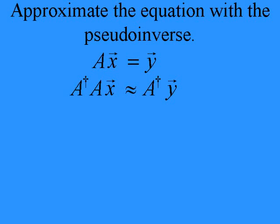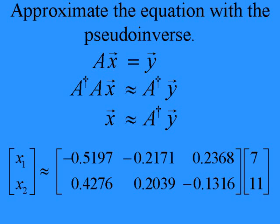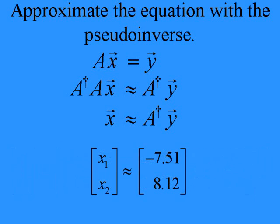Now on to solving the actual linear system that we're interested in. We multiply both sides of the equation from the left by A dagger, but notice that we use the approximately equal sign because the Moore-Penrose pseudo-inverse will produce a least squared error approximation to the x vector. On the left hand side, A dagger A equals the identity, so we're left with x equals A dagger y. Now we plug in the specific numbers for the Moore-Penrose pseudo-inverse we already computed, and the final answer is x1 equals minus 7.51 and x2 equals 8.12.